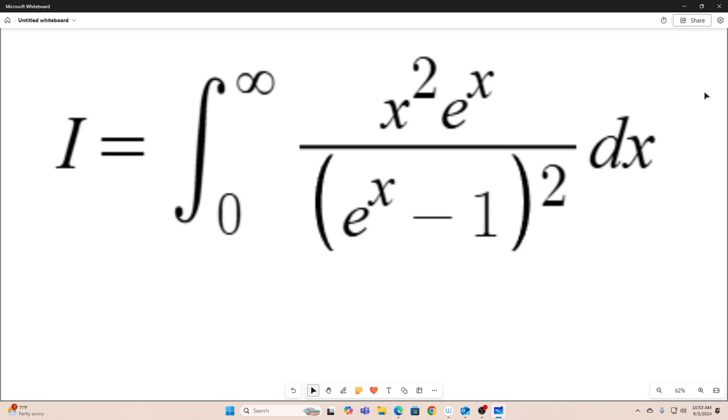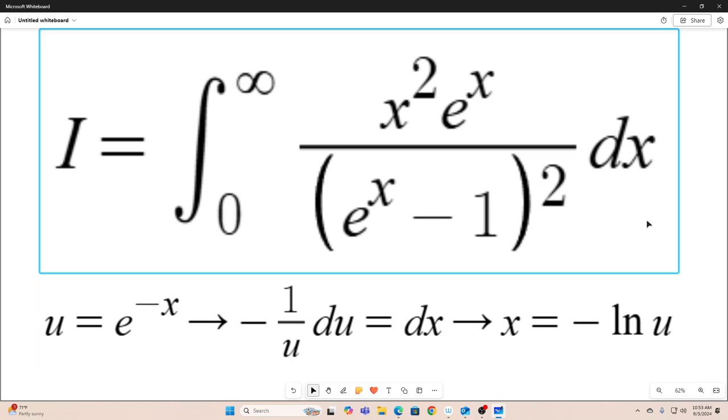Alright, where are we going to start with this? Well, I don't see an obvious reparameterization right away. So let's go ahead and do a substitution. Let's let u equal to e to the negative x. And that implies the rest of the stuff. So these are all our pieces for our substitution.